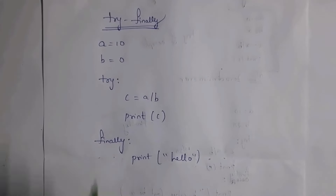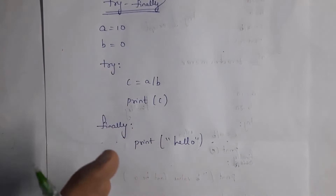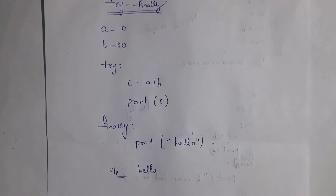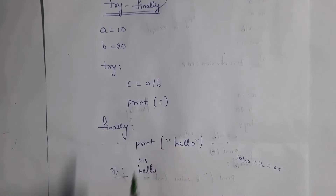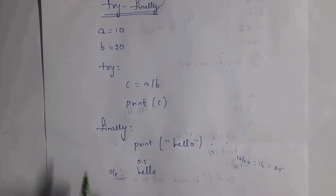Now let's understand the finally block. Using the same example, in place of the except block you write 'finally'. No matter whether there is an exception or not, the finally block is always executed. If an exception occurs, the finally block still executes. If no exception occurs, the finally block still executes. For example, with b = 0 we get an exception, so the try block is skipped, but the finally block executes and prints 'hello'. With b = 20, there is no exception, so we get output 0.5 from the try block, and then the finally block also executes — giving output 0.5 and 'hello'.